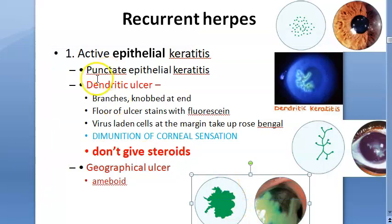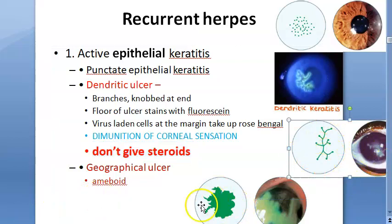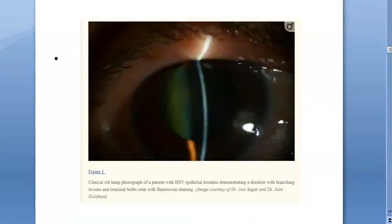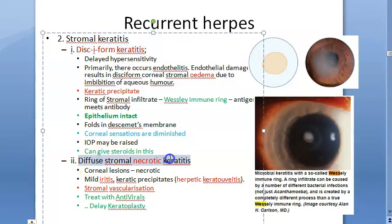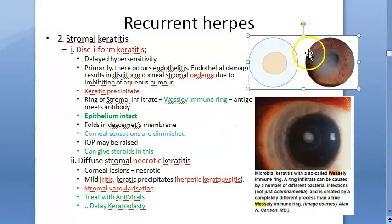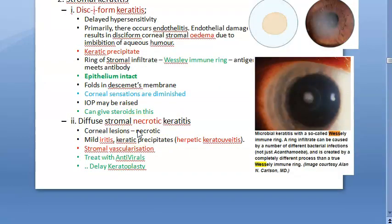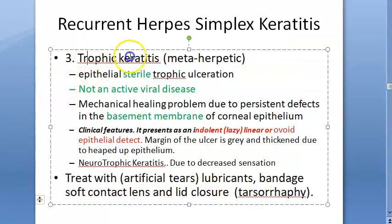In recurrent herpes simplex keratitis, the epithelium and stroma can be affected. Epithelial involvement: dendritic ulcer, then geographic ulcer. Note: do not give steroids for dendritic ulcer. Stromal involvement: disciform keratitis (with Wessely immune ring — steroids can be given here) and diffuse stromal necrotic keratitis. Trophic/metaherpetic keratitis is the third type — not an active viral disease.